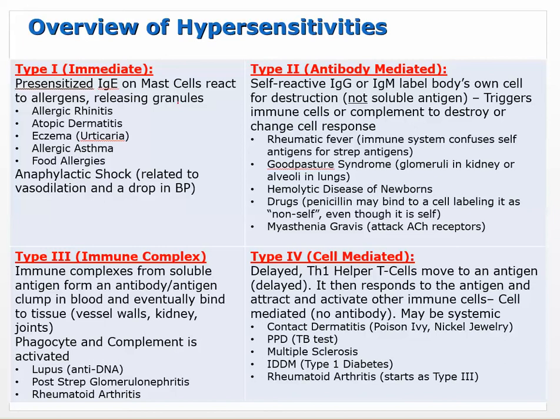Insulin-dependent diabetes mellitus, type 1 diabetes, is listed as a type 4 hypersensitivity. Don't get too hung up on these because a disease could be listed as a couple of different types - it's really important that you understand the mechanism rather than memorizing which diseases are which type of hypersensitivity.